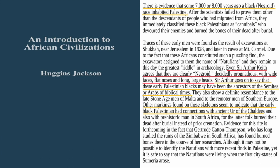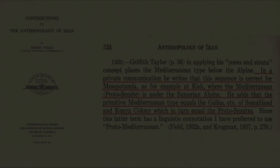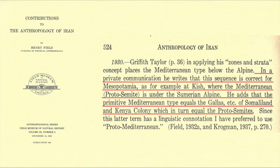Sir Arthur goes on to say that these early Palestinian blacks may have been the ancestors of the Semites or Arabs of biblical times. According to the book titled Contributions to the Anthropology of Iran, this sequence is correct for Mesopotamia — as at Kish, where the Mediterranean proto-Semite is under the Samarian Alpine. The primitive Mediterranean type equals the Galas of Somaliland and Kenya Colony, which in turn equal the proto-Semites.